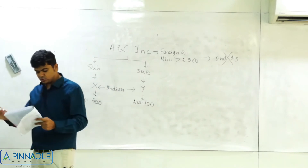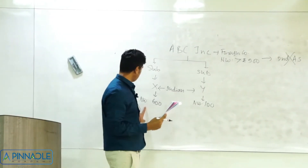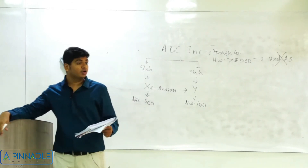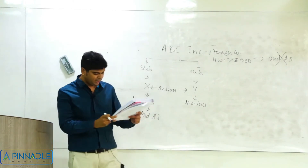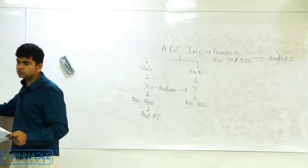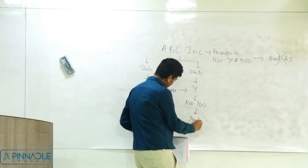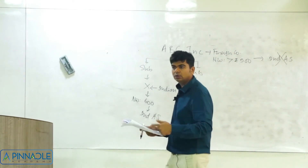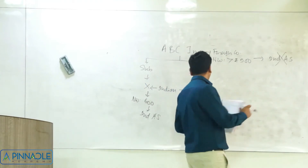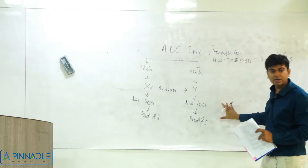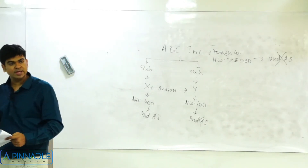For Company X with net worth 600 crores — yes, it will follow Ind AS. For Company Y with net worth 100 crores — no, it will not follow Ind AS and will continue with existing accounting standards. The decision is based on the net worth of individual companies, not the net worth of the foreign parent. Each Indian company looks at its own net worth to decide Ind AS applicability.